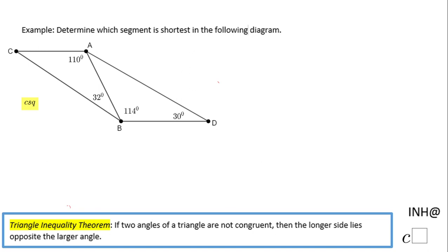Welcome back to INHAT C squared. In this example we need to determine which segment is shortest in the following diagram: AC, AB, BC, AD, or BD. We're going to use the Triangle Inequality Theorem on two triangles - triangle ABC first, then triangle ABD.